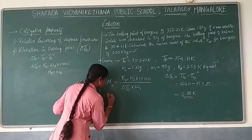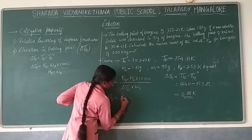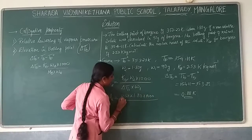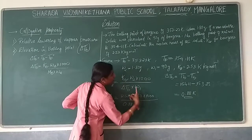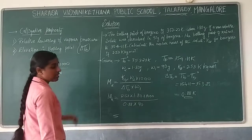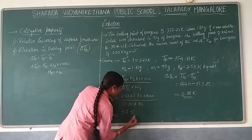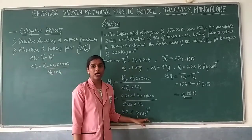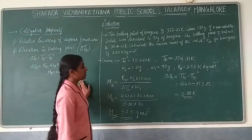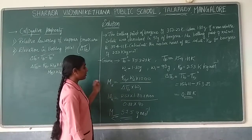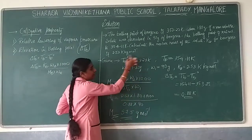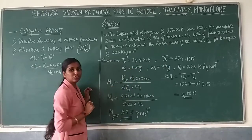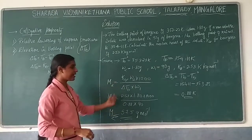Substituting into the formula: M2 = Kb into W2 into 1000 divided by delta Tb into W1. That is 2.53 into 1.80 into 1000 divided by 0.88 into 90. You will get the answer approximately 57.5 gram per mole. Molar mass should be written in terms of gram per mole. Substitution is straightforward — just be careful not to confuse W2 with W1, and Tb with Tb0.